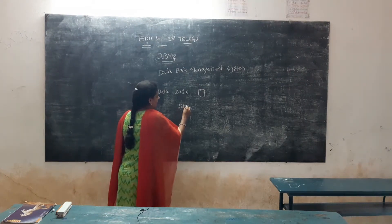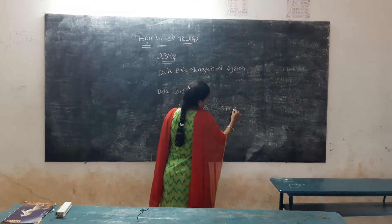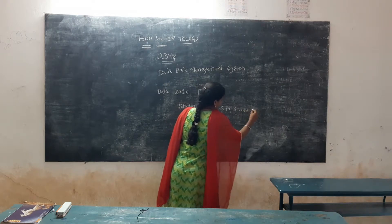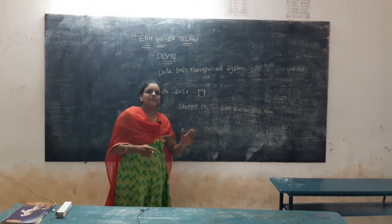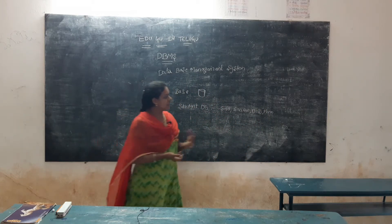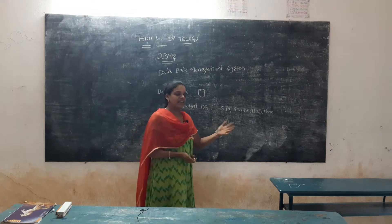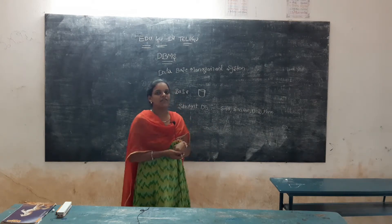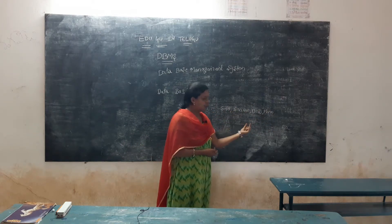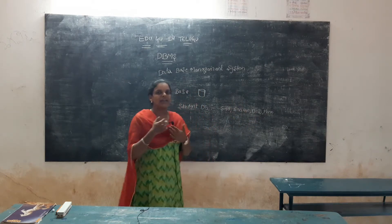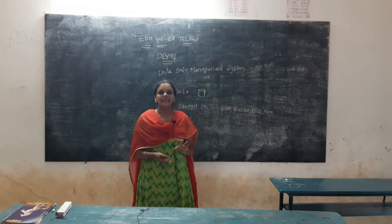For example, if you have a student database, in the database we store: student number, student name, student date of birth, student phone number. Student information can also include place and category. We can store a lot of data in the database. So in particular fields, we consider data in the database.